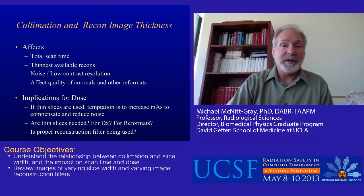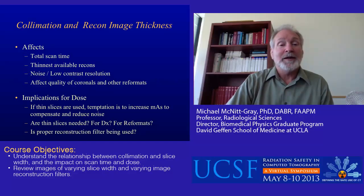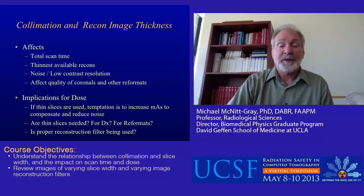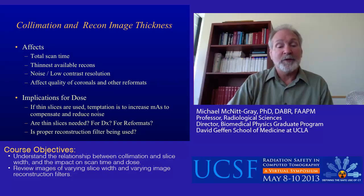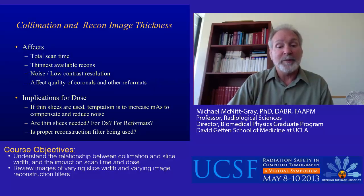In summary, collimation and reconstructed image thickness affect total scan time, the thinnest available reconstructions, noise and low contrast resolution, and the quality of coronals and other reformats. There are dose implications: if thin slices are used, there may be temptation to increase MAS to reduce noise. Key questions are whether thin slices are needed for diagnosis or reformats, whether the proper reconstruction filter is being used, and that narrower collimations are typically less dose efficient.